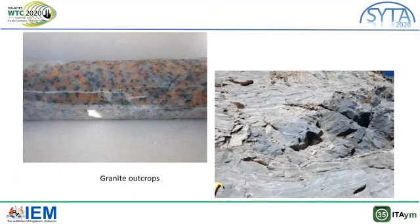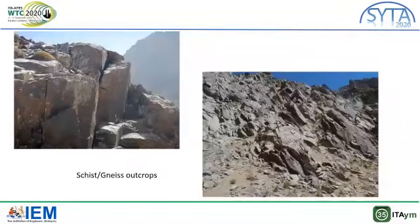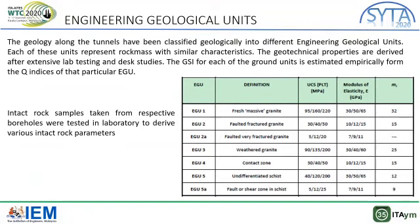You can see pictures of some gneiss outcrops from the site, as well as from samples taken to the lab. Looking at the photos, you'll be quite confident in identifying the massiveness of the gneiss outcrops. Also, please have a look at the schist and gneiss outcrops — they too look very competent. We have classified the alignment into different engineering geological units, each representing rock mass with similar characteristics. The geotechnical properties are derived after extensive lab testing and field studies, with some field tests also performed.